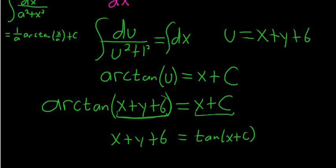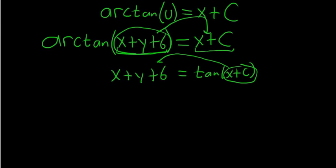So arctan takes this and sends it here. So the tangent takes this and sends it back. Now you just subtract 6 and subtract x. So y equals tan(x plus C) minus x minus 6.